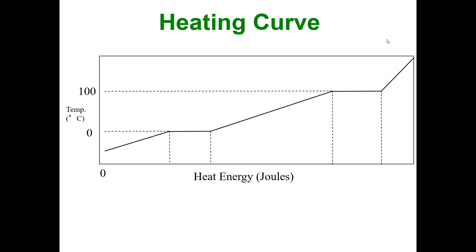I want to start with a basic heating curve — what it looks like and how you can read it. The y-axis is typically in temperature. When you look at the x-axis, there are different values. You could have heat energy added to the system; sometimes they'll just have time or progression of heat added, but the most common is heat energy added to the system.